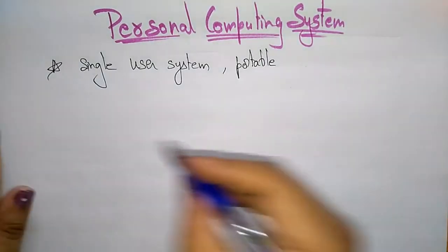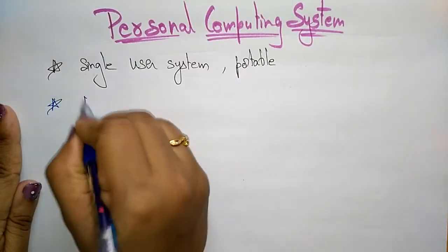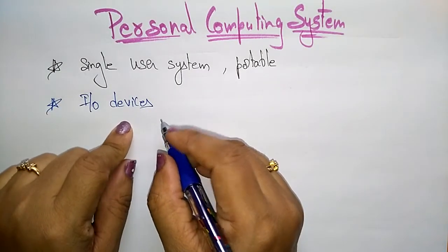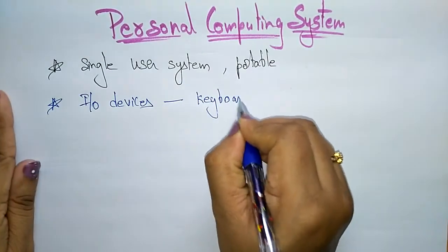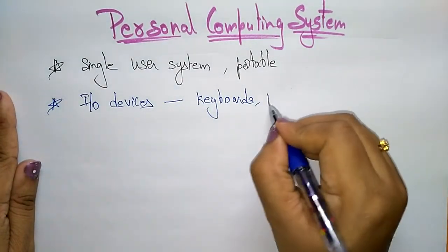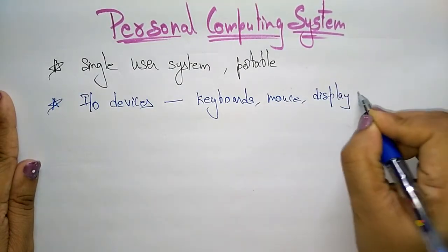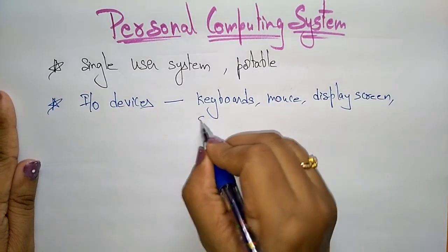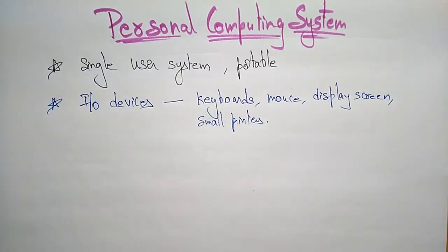In a personal computing system, I/O devices are present. The I/O devices present in your personal computer are keyboards, mouse, display screen (monitor), small printers, etc. These are some of the I/O devices present in your personal computer.